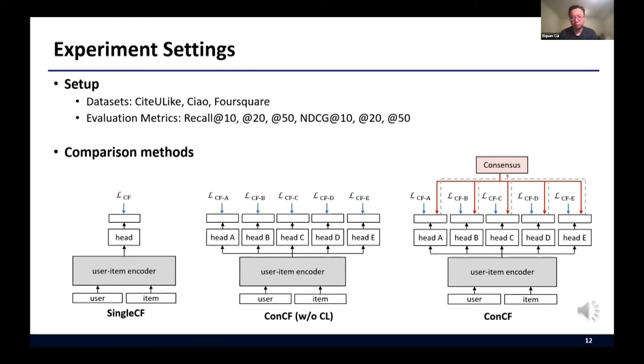We also compare ConCF with ConCF without CL, which removes the consensus learning process from ConCF. This is equivalent to the popular multi-task learning approach. Finally, our proposed framework, ConCF uses multi-branch architecture trained by heterogeneous objectives along with the consensus learning.